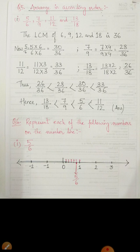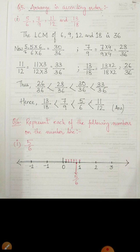Now we convert each number to have a denominator of 36. For 5 by 6, we multiply both numerator and denominator by 6. Similarly, for 7 by 9, we multiply both by 4. In this way, we convert all the fractions into equivalent fractions and arrange them in ascending order: 26 by 36 is less than 28 by 36, is less than 30 by 36, is less than 33 by 36. We must then convert these back to the original fractions given in the question for the final answer.